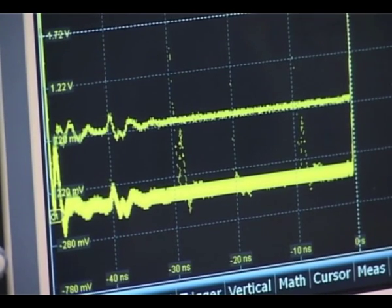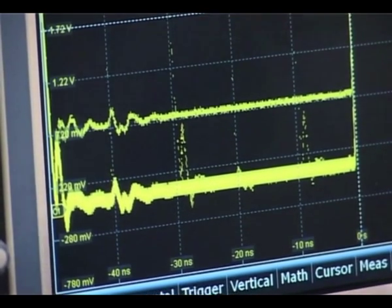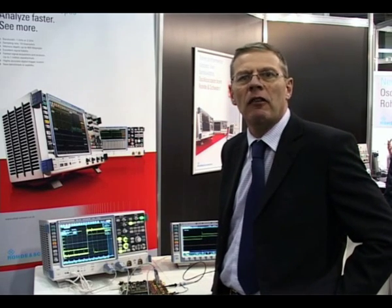We can see that there's a transient there of about one division and as we're on a division time base of 15 nanoseconds per division we can get a rough idea of the size of that.